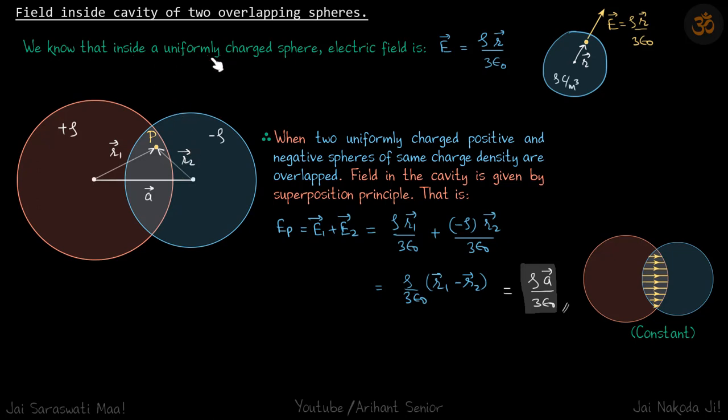For that, we are going to use this formula for a uniformly charged sphere. Inside that, the electric field is given as rho r by three epsilon.